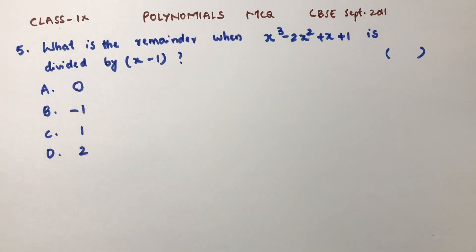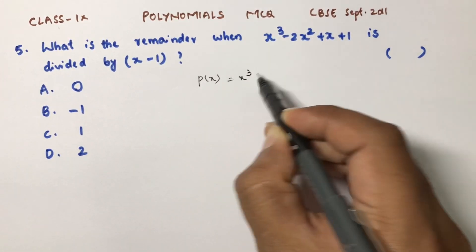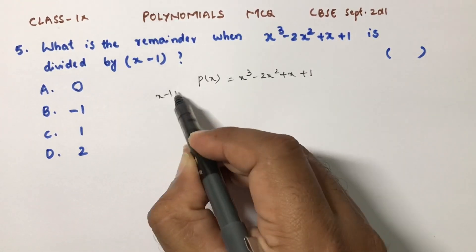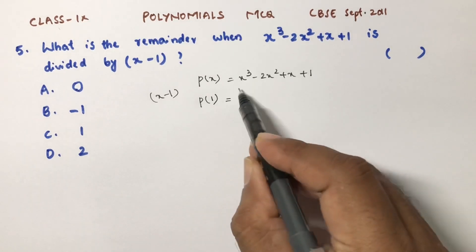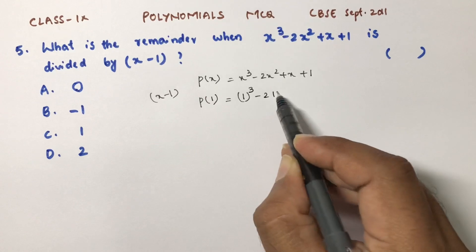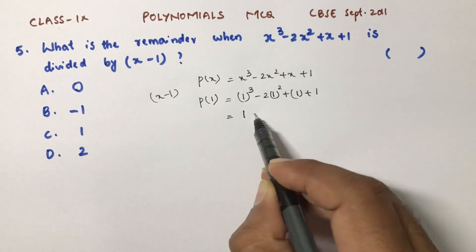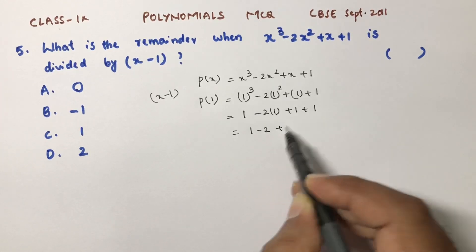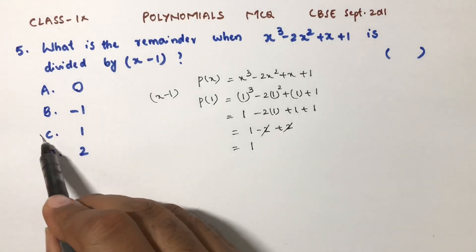What is the remainder when x³ - 2x² + x + 1 is divided by (x - 1)? Let p(x) = x³ - 2x² + x + 1. Dividing by (x - 1) means the remainder is p(1): 1³ - 2(1²) + 1 + 1 = 1 - 2 + 1 + 1 = 1. The remainder is 1. The correct option is C.